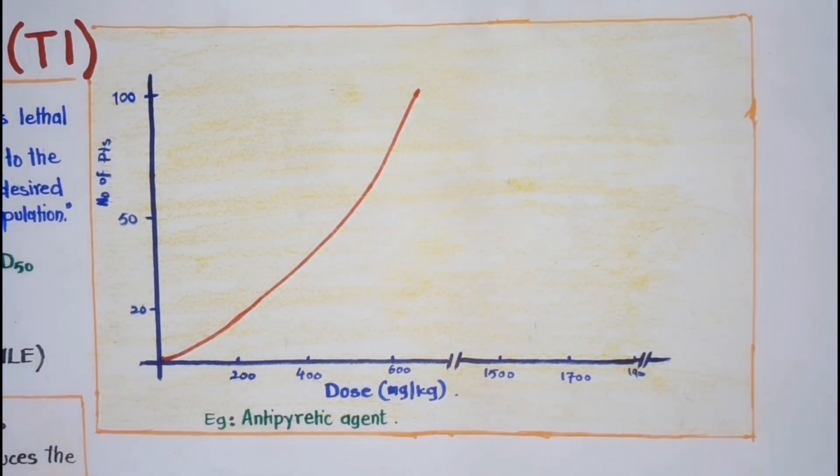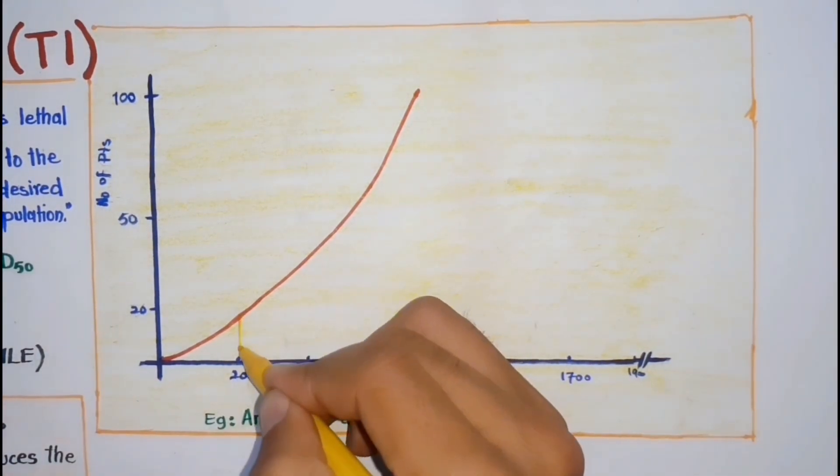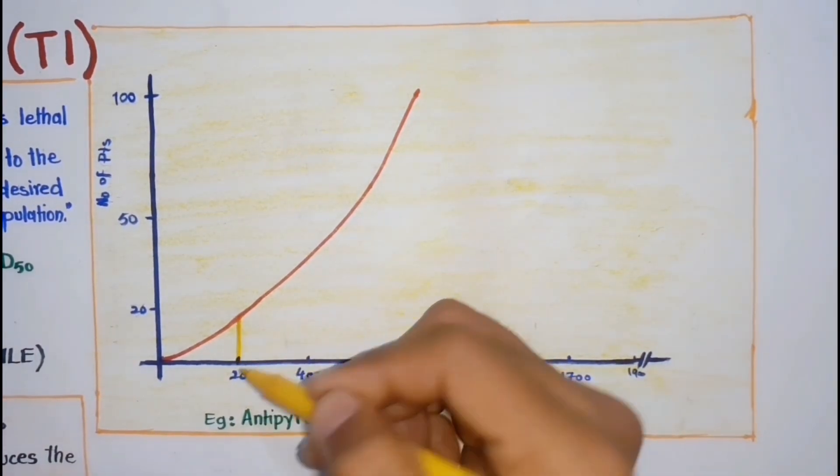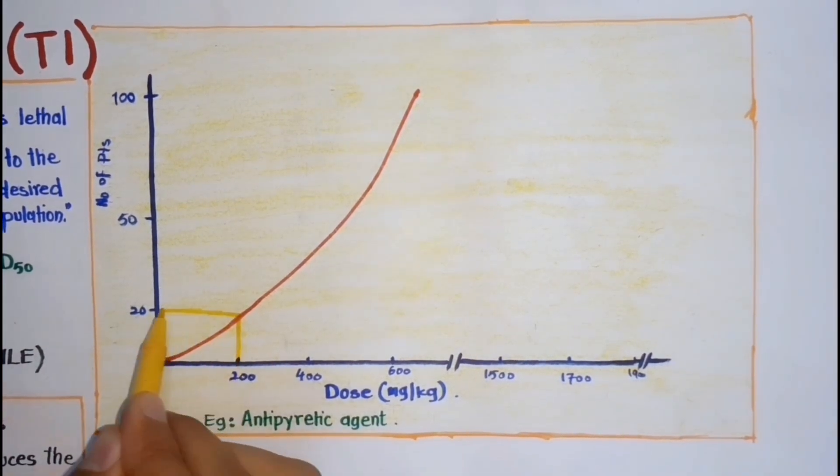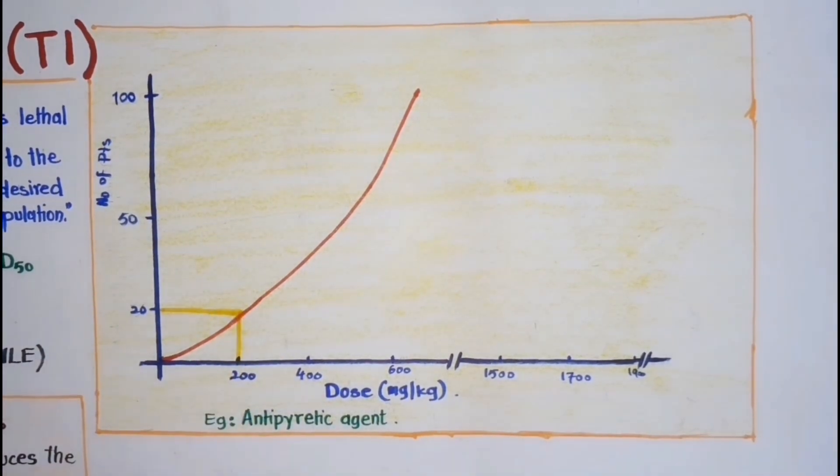And for example, when the doses of 200 mg are given to all subjects, so in only 20 subjects the antipyretic response was noted.